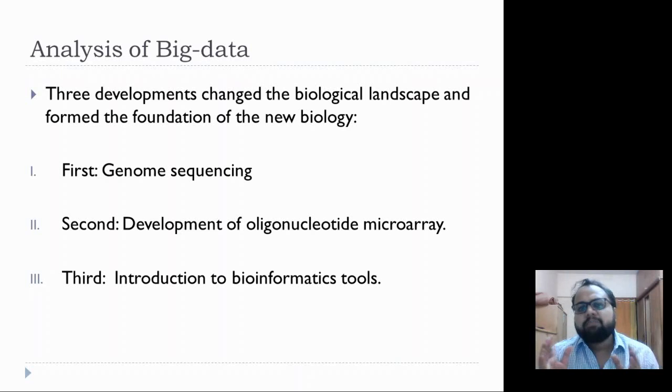There were three important developments which changed the entire biological landscape and how we see biology today. The first one was genomic sequencing. Genomic sequencing led to the formation of big data - huge or large-scale data. The human genome project created tons of data, somewhere in terabytes, and analysis of this data was a critical thing.